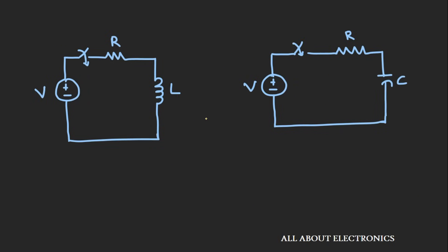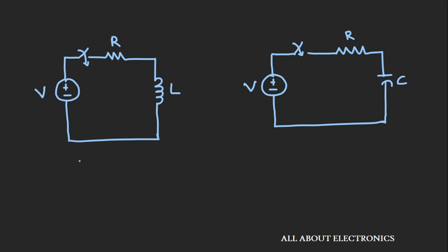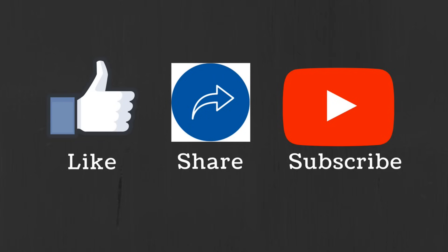In the next video, we will see the transient response of RL and RC circuits — both source-free behavior and with DC excitation — graphically as well as mathematically, and we will solve some problems based on this transient analysis. If you have any questions or suggestions, please let me know in the comment section below. If you liked this video, hit the like button and subscribe to the channel for more such videos.